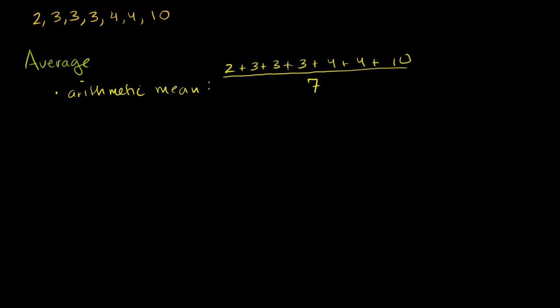And what is this equal to? This is 2 plus 9, which is 11, plus 8, which is 19, plus 10, which is 29. So this is going to be equal to 29 over 7, or you could say it's equal to 4 and 1 seventh.